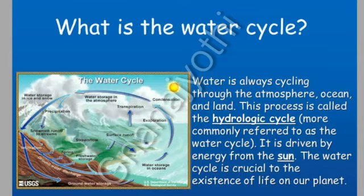What is the Water Cycle? Water is always cycling through the atmosphere, ocean, and land. This process is called the hydrologic cycle, more commonly referred to as the water cycle. It is driven by energy from the sun, and the water cycle is crucial to the existence of life on our planet.